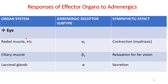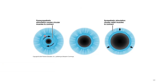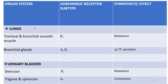Responses of effector organs to the adrenergic system — on the eye: the radial muscle of the iris has alpha-1 receptors; stimulation causes contraction, resulting in mydriasis. The ciliary muscle has beta-2 receptors; stimulation causes relaxation for far vision. Lacrimal glands have alpha receptors; secretion is stimulated. The circular muscle of the iris has M3 receptors, and the radial muscle has alpha-1 receptors — stimulation of alpha-1 causes contraction of the radial muscle, producing mydriasis.